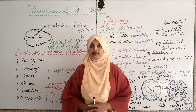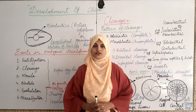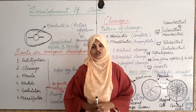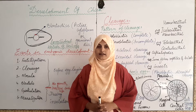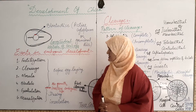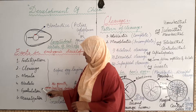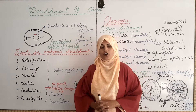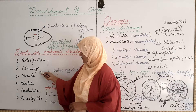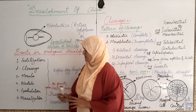Fertilization in the hen is internal and the egg is laid after 24 hours of fertilization. When fertilization takes place within the egg, the second event starts within the egg of hen which is termed as cleavage. The different stages or events taking place in the development of the chick are: fertilization, then cleavage, then morula, then blastula, then gastrulation, and then neurulation.